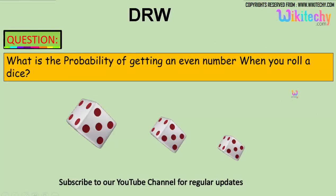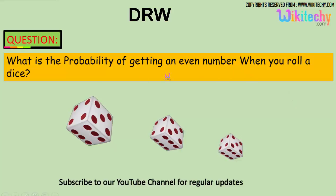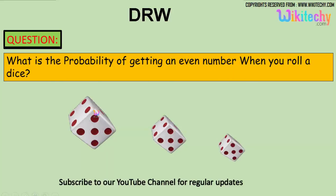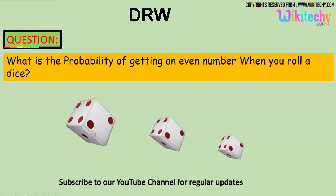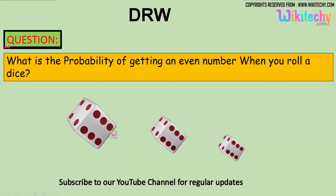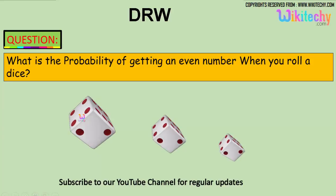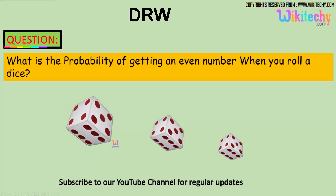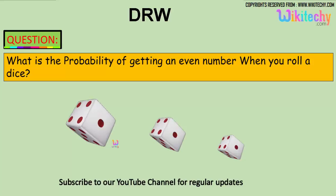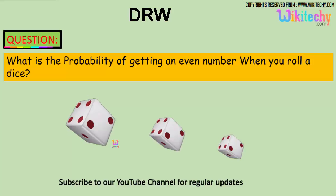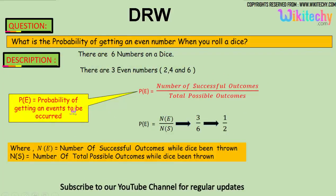So what is the probability of getting an even number when you roll a dice? A dice will have six numbers: 1, 2, 3, 4, 5, and 6. So we got six numbers, and the question is: what is the probability of getting an even number?